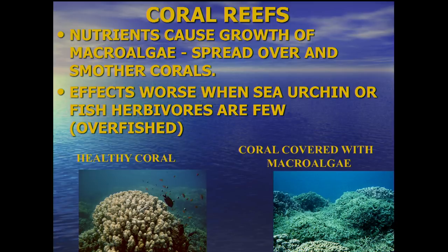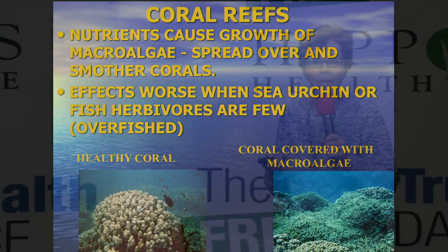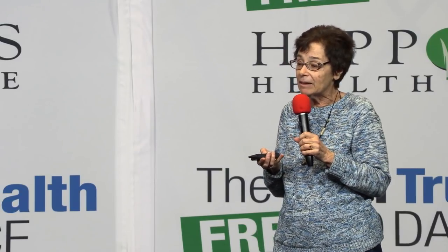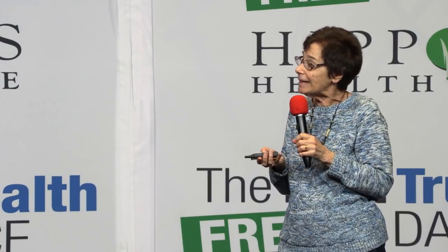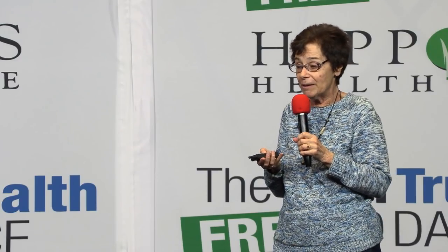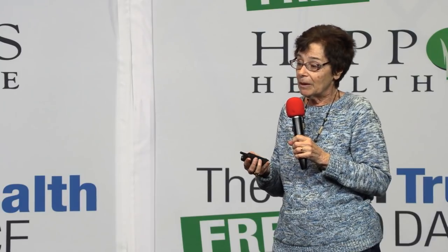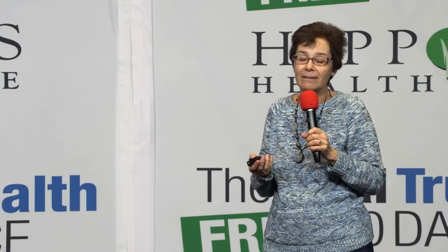Further south we have coral reefs that are also in big trouble because of excess nutrients and eutrophication. The excess nutrients cause other kinds of algae to overgrow the corals and cover them. The algae has covered the coral - this is what the coral looked like originally, and here it is covered with algae stimulated to grow by the nutrients. If you have a lot of animals like sea urchins or certain fish that eat that algae, they may keep it under control. But if you've overfished and don't have many of those fish around, your coral reef is in bigger trouble from getting the coral overgrown by algae.